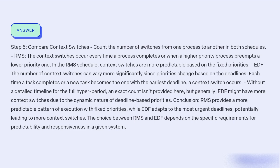Step 5: Compare context switches. Count the number of switches from one process to another in both schedules. In RMS, context switches occur every time a process completes or when a higher-priority process preempts a lower-priority one — switches are more predictable based on fixed priorities. In EDF, the number of context switches can vary more significantly since priorities change based on the deadline; each time a task completes or a new task becomes the one with the earliest deadline, a context switch occurs. Generally, EDF may have more context switches due to the dynamic nature of deadline-based priorities.